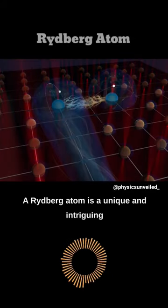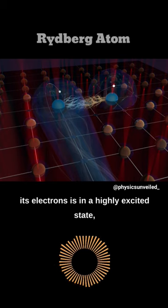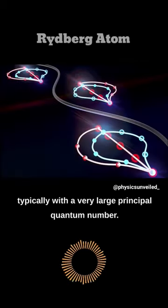A Rydberg atom is a unique and intriguing type of atom that occurs when one of its electrons is in a highly excited state, typically with a very large principal quantum number.